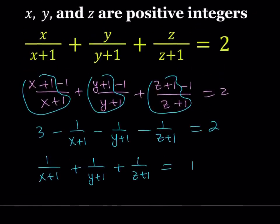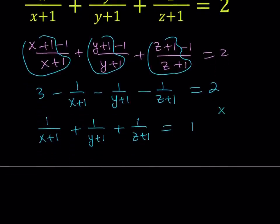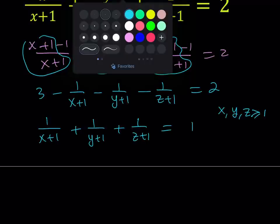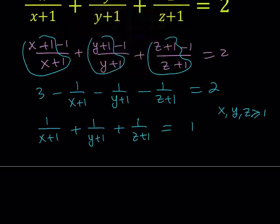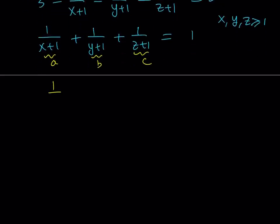Now, if you remember, X, Y, Z have to be positive integers, so X, Y, Z are all greater than or equal to 1. But now we do have a different situation here — we have X plus 1. So let's go ahead and use substitution, which is one of my favorite methods. Let's call X plus 1 equal to A, Y plus 1 equal to B, and Z plus 1 equal to C. We're getting a simpler looking equation: 1 over A plus 1 over B plus 1 over C equals 1. And notice that since A is 1 more than X, we can safely say that A, B, C are all greater than or equal to 2.